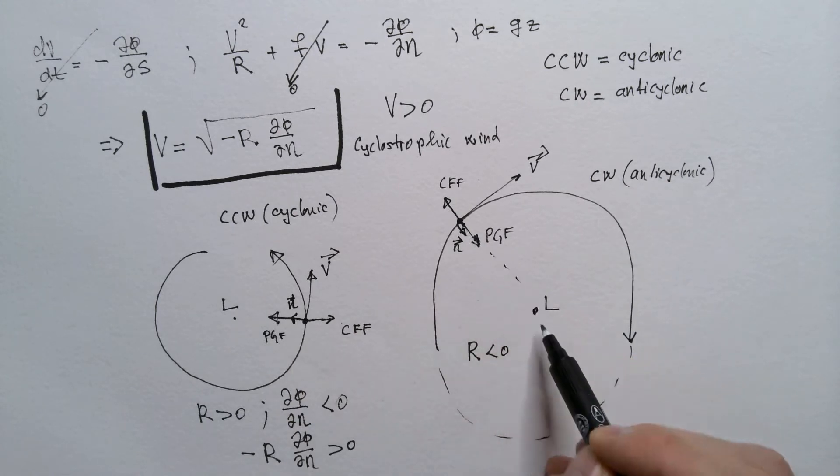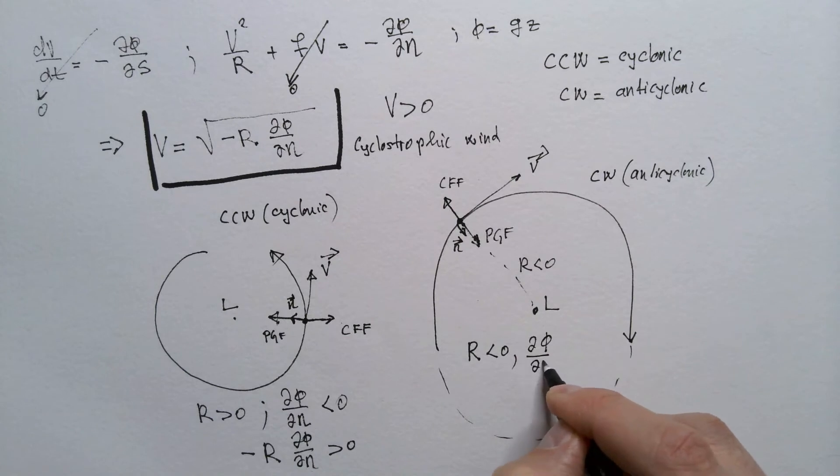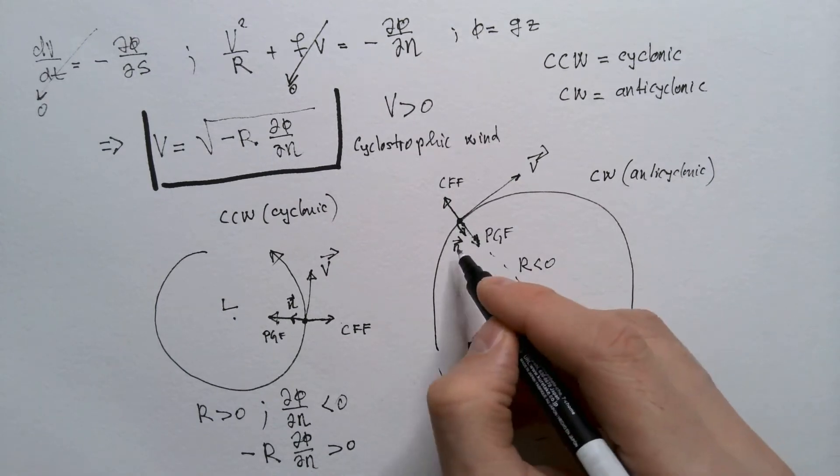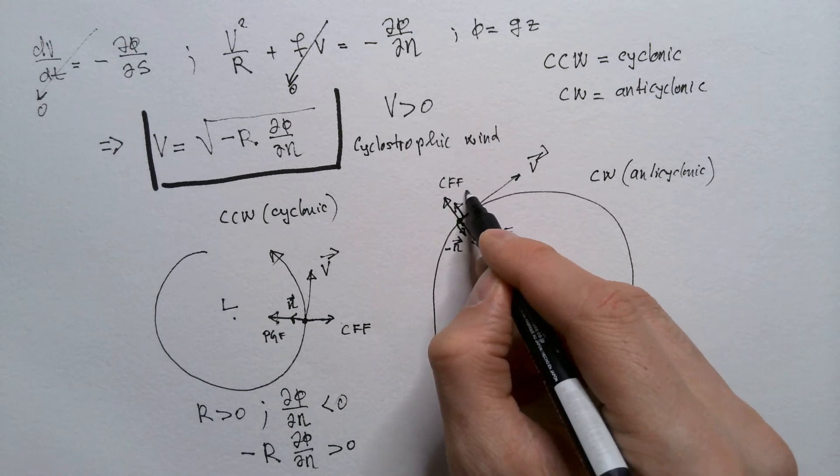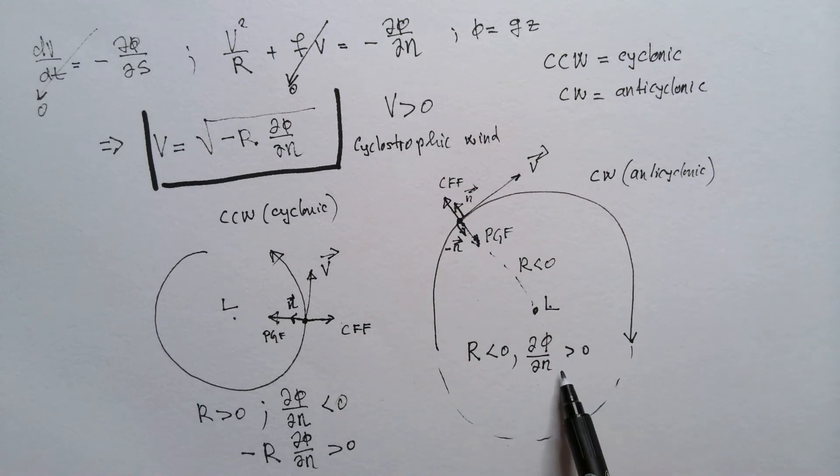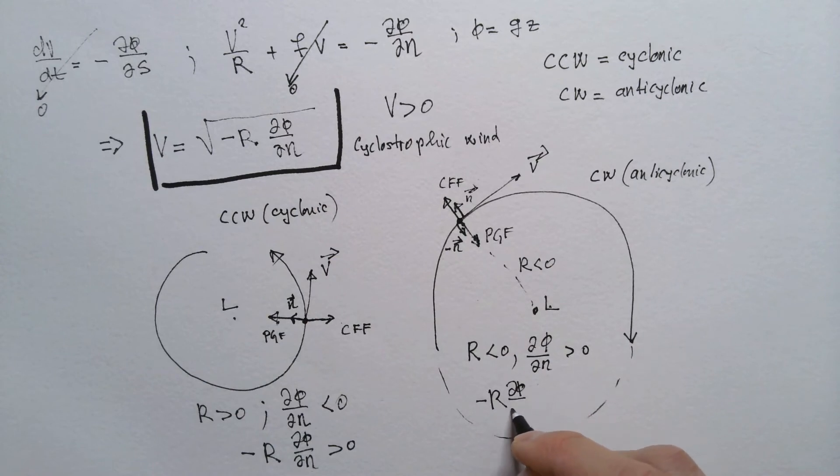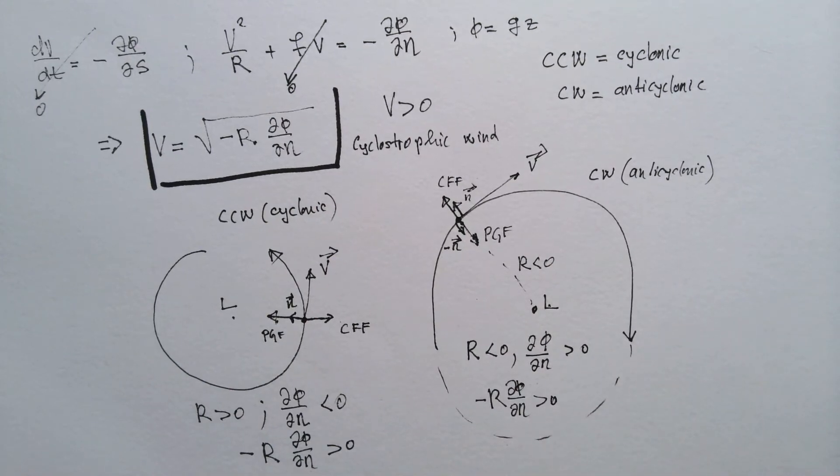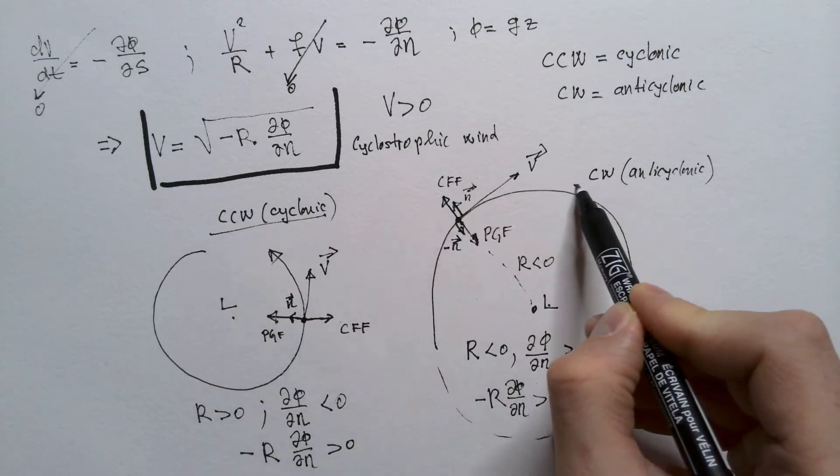However, in this case, delta phi delta n is positive. Because I should really say this is negative n, because it's to the right. Positive n is in this direction. And because this is low pressure, as you are moving in the positive n, pressure is decreasing here expressed through geopotential. And we see that this term, negative R delta phi delta n, again, ends up being positive real number. Which means that small-scale vortices can have both cyclonic as well as anticyclonic motion.